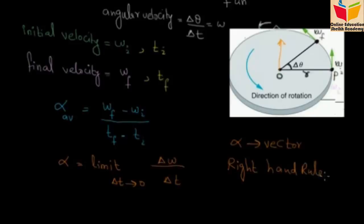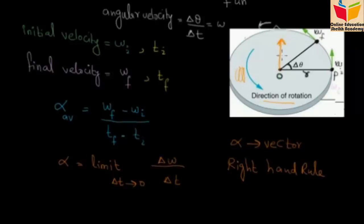We apply the right-hand rule as discussed in the previous lecture. What do you do? You curl your fingers in the direction of rotation. The extended thumb will point out what the axis of rotation is — that is basically the direction of the angular acceleration.